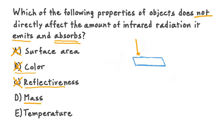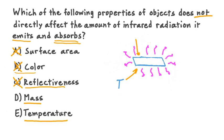Option D suggests that mass does not directly affect these properties. Let's imagine a scenario where we have a material with a given surface area, color, reflectiveness, and temperature T. If we could keep all four of those properties the same but change the mass of this material, would that affect emission and absorption of infrared radiation? The answer is that it would not, at least not directly. So option D, mass, looks like our answer. Checking option E — temperature: if we were to vary the temperature of our material by heating it up, the material would respond by emitting more infrared radiation. Since temperature does directly affect these properties, the answer is confirmed: it is the mass of an object that does not directly affect the amount of IR it emits and absorbs.